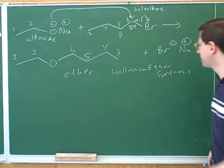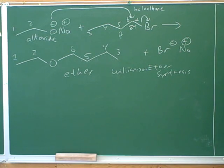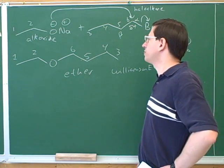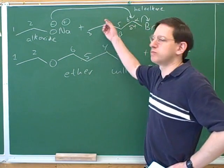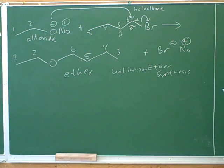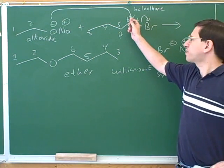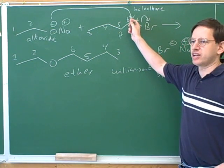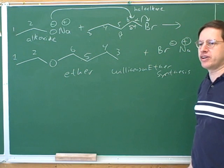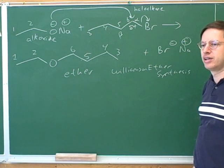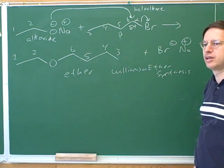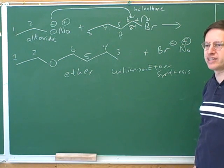I don't know how enthusiastic your instructor is about learning the name for every reaction. The most important thing is not the name, but just to realize this is a normal SN2 reaction. In order to use the Williamson ether synthesis, the haloalkane has to be primary or secondary. Why couldn't it be tertiary? Because of steric hindrance, which would block SN2.